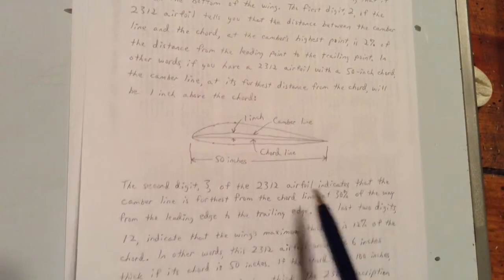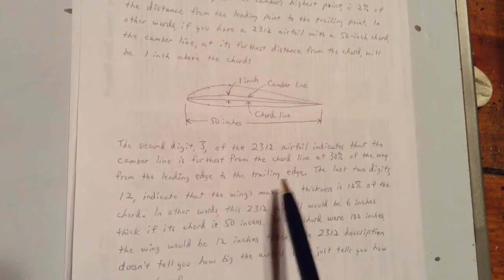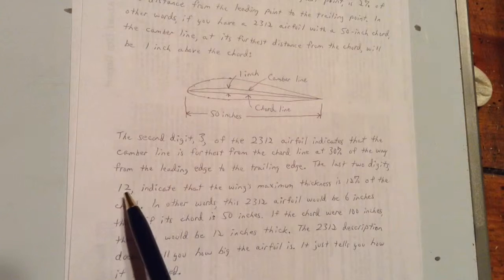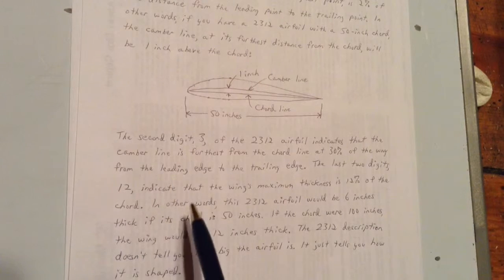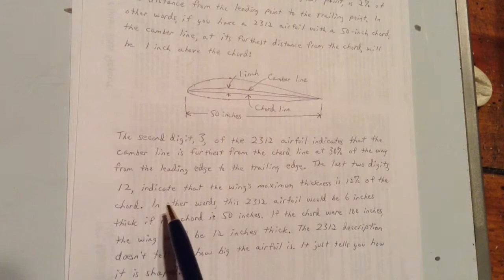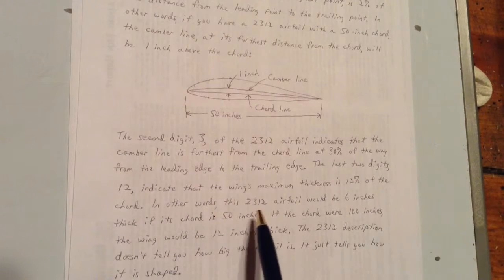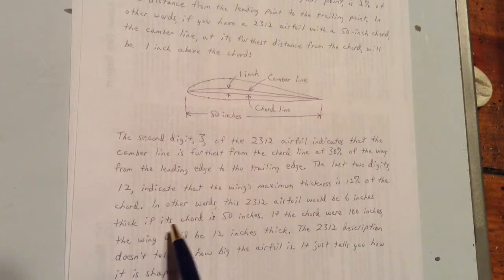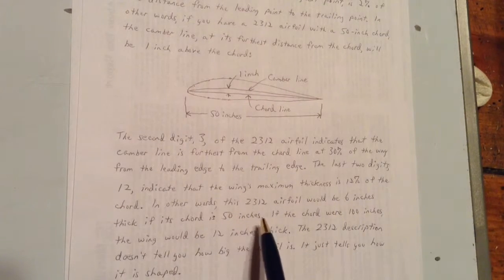The last two digits from the leading edge to the trailing edge, 1-2, indicate that the wing's maximum thickness is 12% of the cord. In other words, this 2-3-1-2 airfoil would be 6 inches thick if its cord is 50 inches thick.